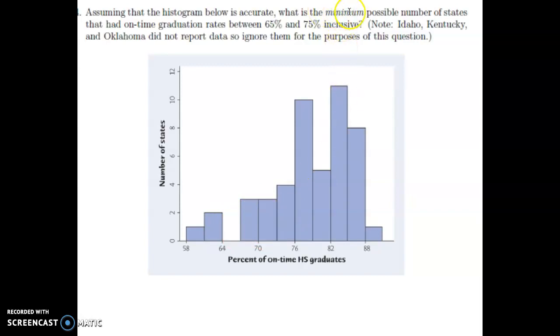If they had said maximum, well, then it could be that all four of those were crowded between 73 and 75. And in that case, we'd have three plus three plus four, ten. The minimum possible is six. The maximum possible here would be ten.